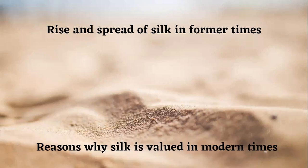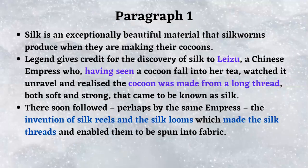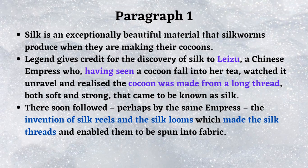The two categories for the silk passage are: 'The rise and spread of silk in former times' and 'Reasons why silk is valued in modern times.' So there is a comparison between former times and modern times. I have divided this passage into sentences — each paragraph has been broken into separate sentences for your convenience, and each sentence is indicated with a bullet.